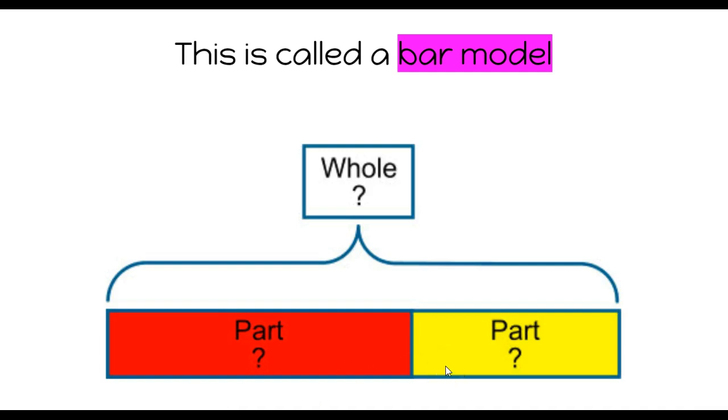This is called the bar model right here. As I mentioned before, you'll have a number on one side, a number on the other side, and when joined together we know that they equal that sum. This serves as a great visual for subtraction because it has the whole fact family here.